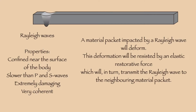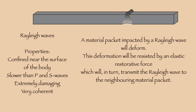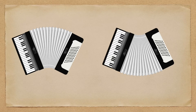This process is perhaps best illustrated rather than explained. Every time a material packet is deformed, the elastic restorative force counteracts that deformation and overcorrects, impacting the neighboring material packet. Rayleigh waves are a little bit slower than S waves, but they are the most destructive form of seismic wave, causing most of the material damage that results from earthquakes. Because of their mode of generation, they are trapped near the surface of the body and remain reasonably coherent for long periods of time, though their energy does decay exponentially with distance. They're kind of like an accordion, with the top compressing while the bottom expands, or the bottom compressing while the top expands.